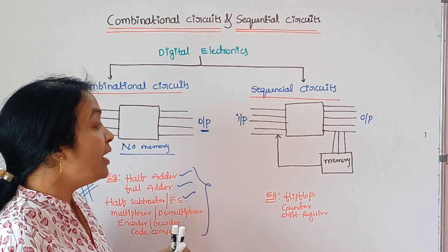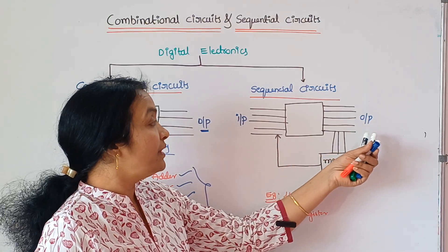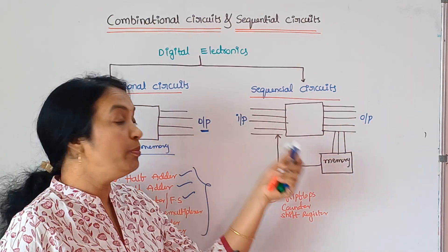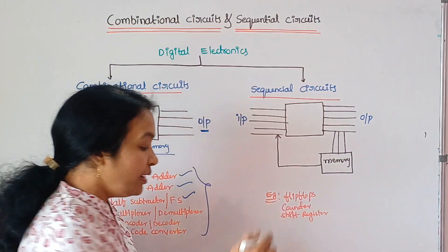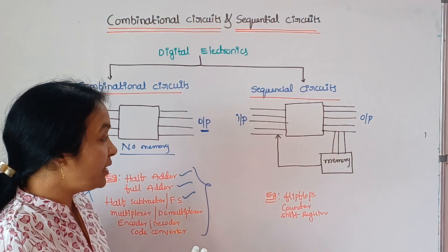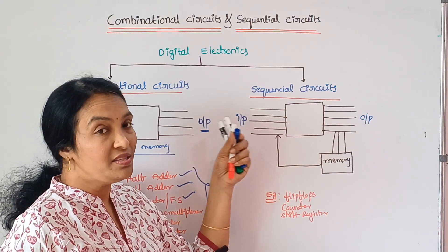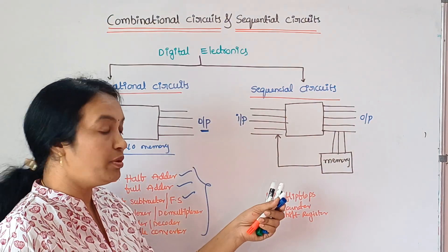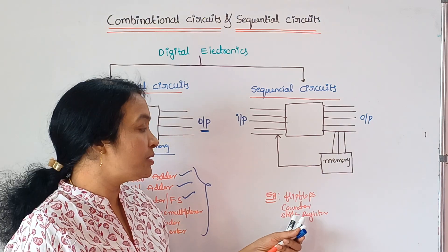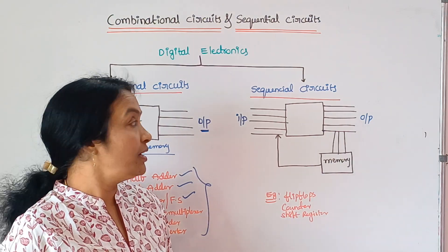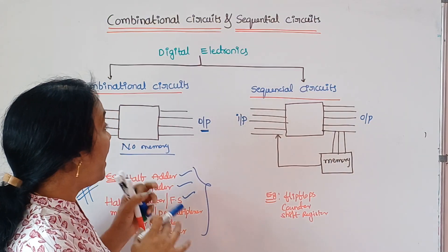For sequential circuits, the output depends on both the input and memory. We need to depend on memory to define the sequential circuit. In future classes, we will use flip-flops, counters, and shift registers as examples of sequential circuits.